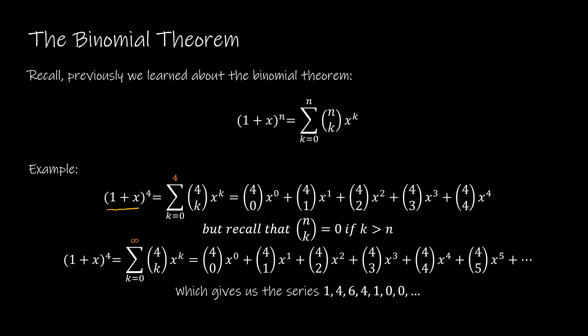We can rewrite (1 + x)^4 as the summation as k goes from 0 to 4, with an upper bound of 4. We're going to use that value of 4 as '4 choose k' in our expression and then x to the k.